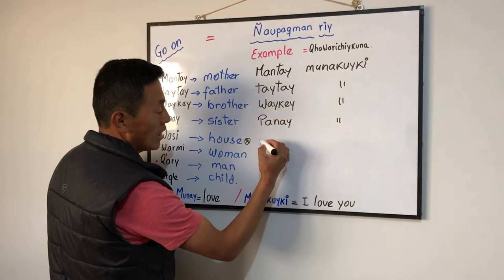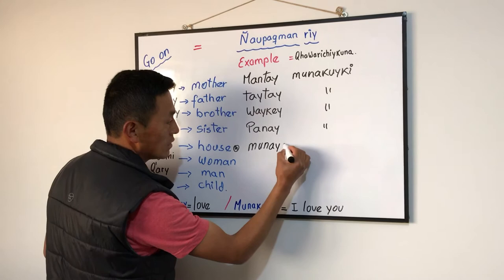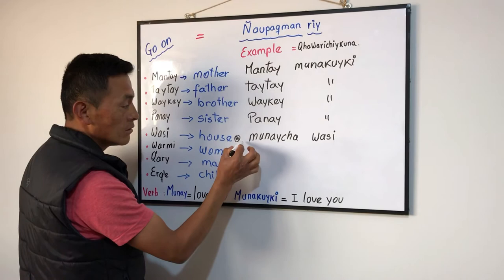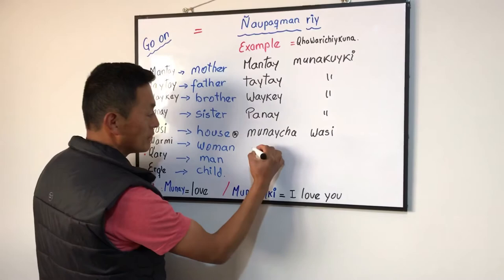But in this case, talking about house in Quechua, we say it differently. Munai Chawasi is different. This is the only thing which is different in this context.